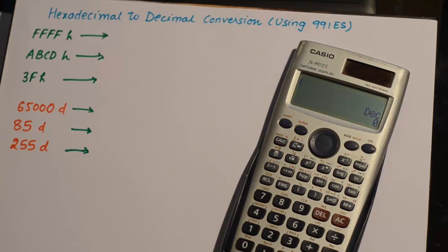Using Casio FX-991ES. I have a bunch of numbers written on the page. The first three numbers are hexadecimal numbers, the next three numbers are decimal numbers. I'll convert them into decimal and hexadecimal respectively, and I'll show how you can do that on the calculator.